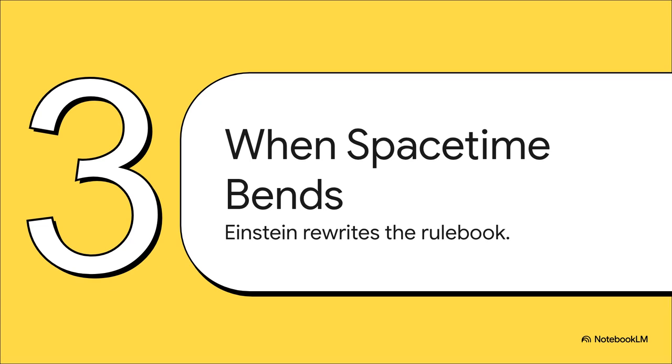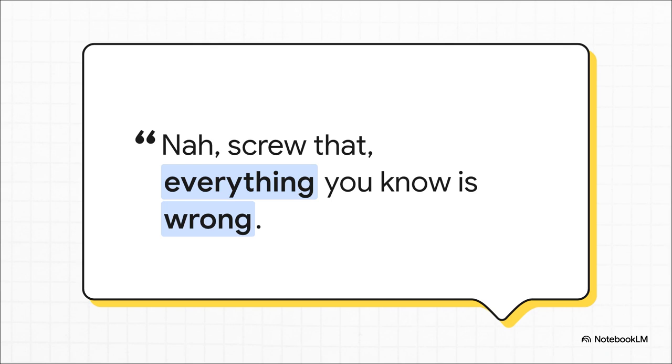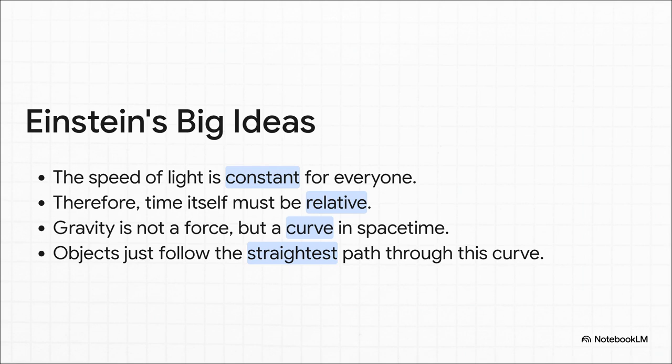So for a while there, it really seems like we had it all figured out. But the closer we looked, especially at weird things like the speed of light, the more the cracks started to show in this nice, neat picture. And then this guy showed up. Albert Einstein. And he didn't just add a new chapter to the rulebook. He basically took the whole thing, threw it in the trash, and started over. Yeah, this pretty much sums up his vibe. He just kind of walked onto the scene, looked at Newton's perfect clockwork universe, and was like, nah, screw that. Everything you think you know is wrong. And his ideas? They were mind-bending.